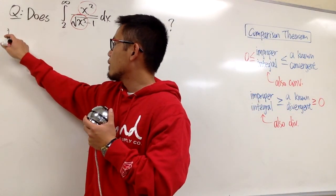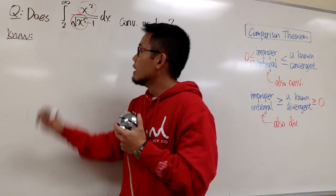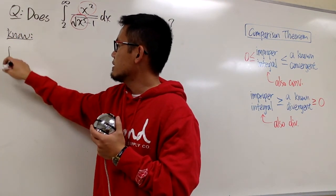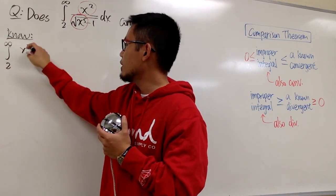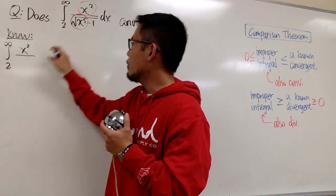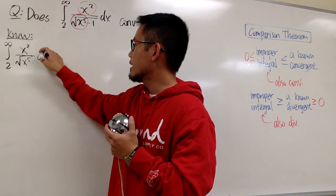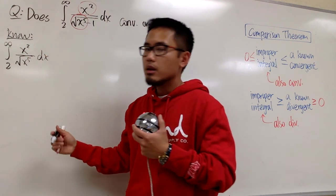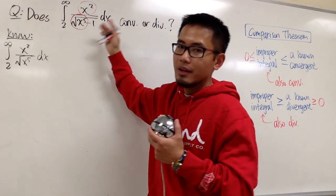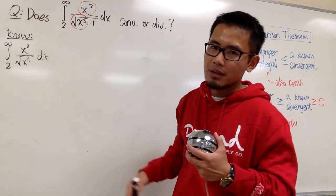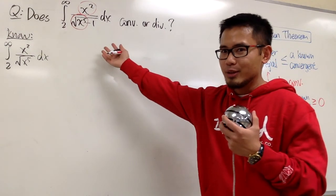Let's write down what we know. The integral from 2 to infinity, on the top we just have x squared, over the square root of x to the fifth on the bottom. The trouble is that once you have the minus 1 inside, this integral becomes so much harder to integrate.